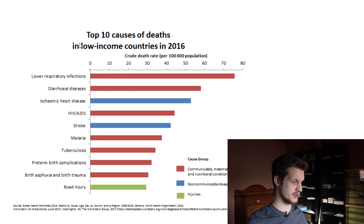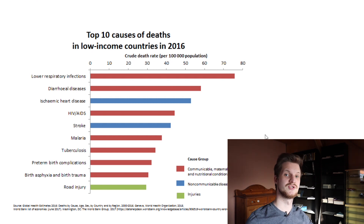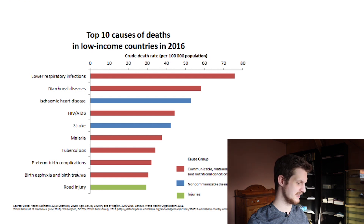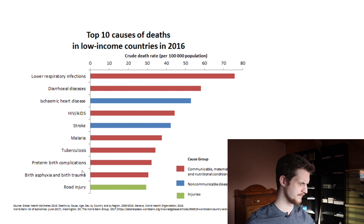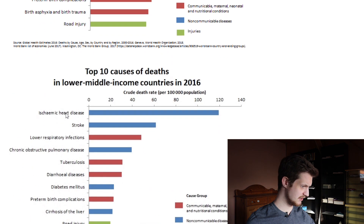If we look at the top 10 causes of death in low-income countries in 2016, we see even more red — more infectious diseases — and these could be limited if those countries had better access to modern treatment methods and more financial resources. Pre-term birth complications are also very prominent here, which is sadly due to limitations in access to medical care throughout the population. HIV/AIDS is also up there and is absolutely more prevalent in those countries.